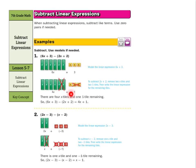Now, it gets a little bit more complicated when we're subtracting with negatives. We have the 2x plus a negative 3 instead of minus 3, and we're going to remove an x, and remove two of the negative 1s, which is negative 2, to get x minus 1.